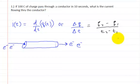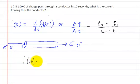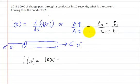Here we have 100 coulombs of charge, and we're seeing it pass through — it starts here and flows all the way through. It takes 10 seconds to flow through. So let's pop in those values. The current at 10 seconds is going to be equal to q2, which is 100 coulombs, minus q1, which is starting at this point.